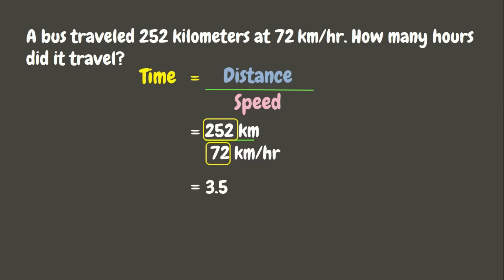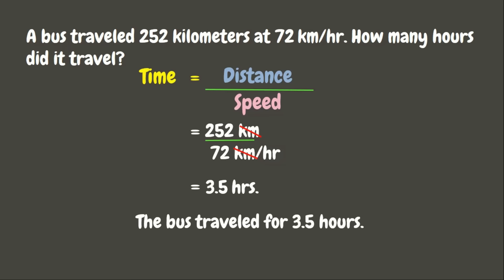Now, since we have 2 units of kilometer here, we can simply cancel this out, because kilometer divided by kilometer is 1. That leaves our unit, which is hours. Therefore, the bus traveled for 3.5 hours.